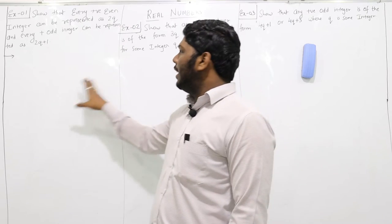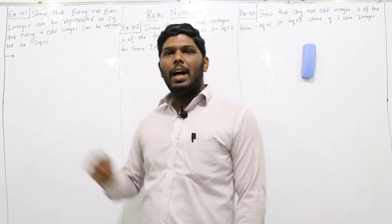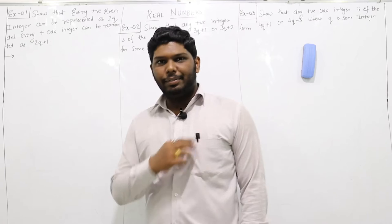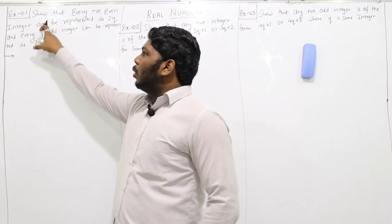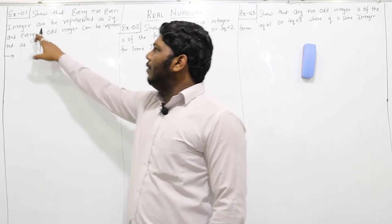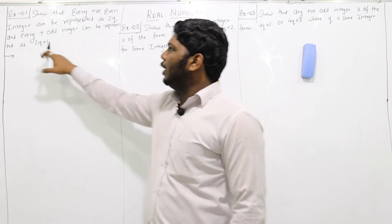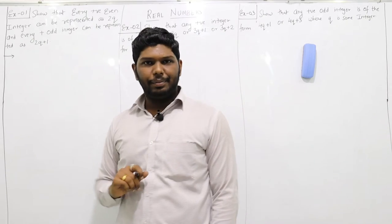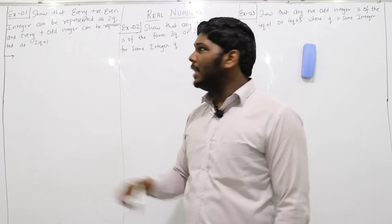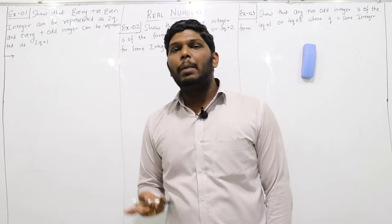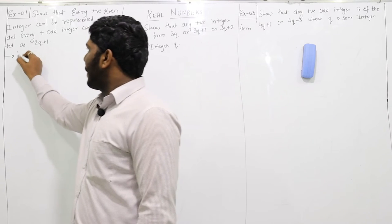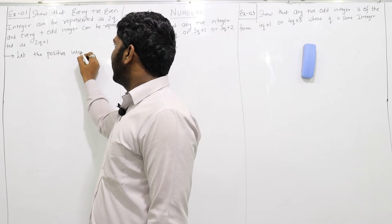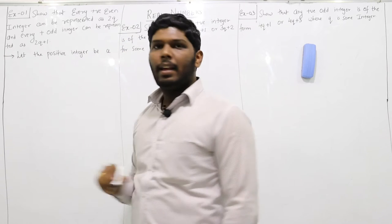As you can see, I have written three questions here. These questions can be asked for one, two, or three marks, depending upon the difficulty level. So let us start one by one. Question number one: show that every positive even integer can be expressed as 2q and every positive odd integer can be expressed as 2q plus 1. To start with this type of question, we need a positive integer, so let that positive integer be a.